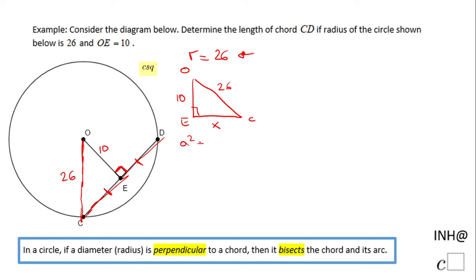So we have here 10² + x² = 26². We have to solve this equation and find x. First, 10² is 100, plus x².